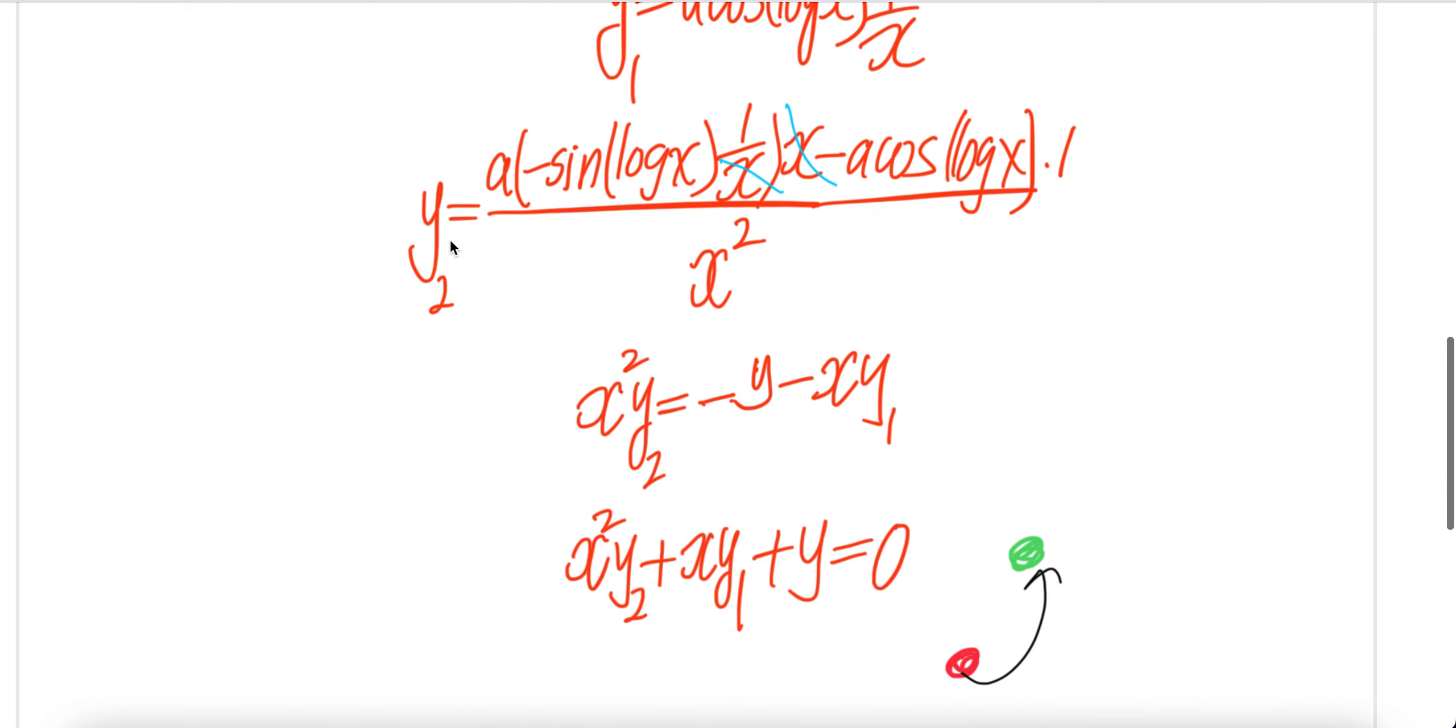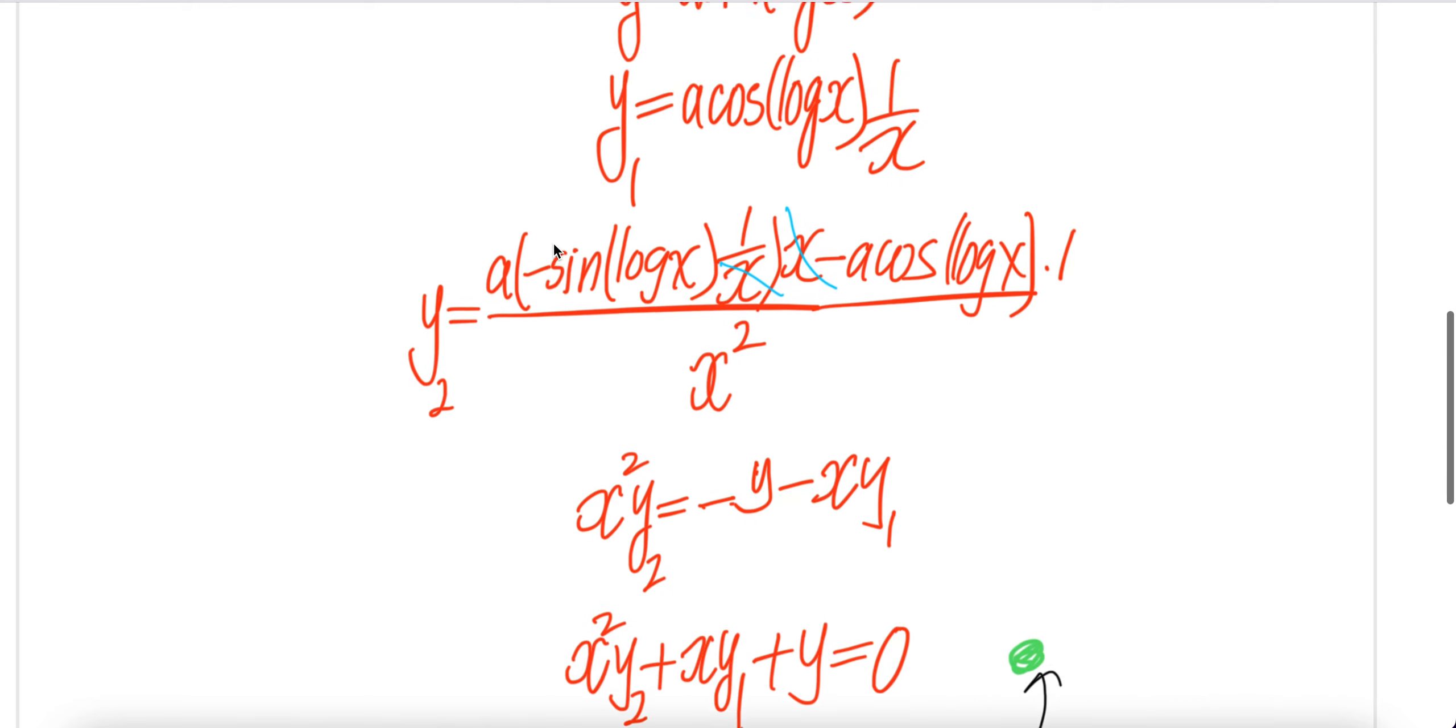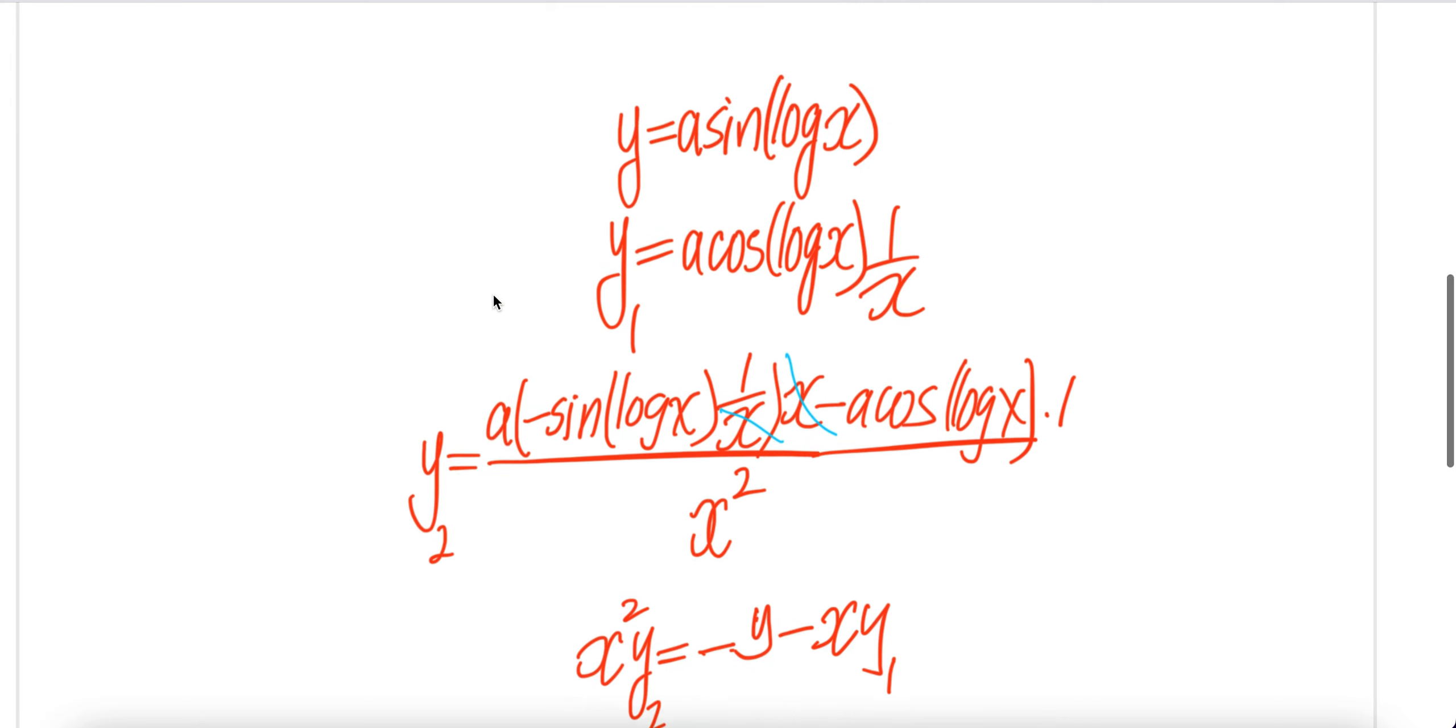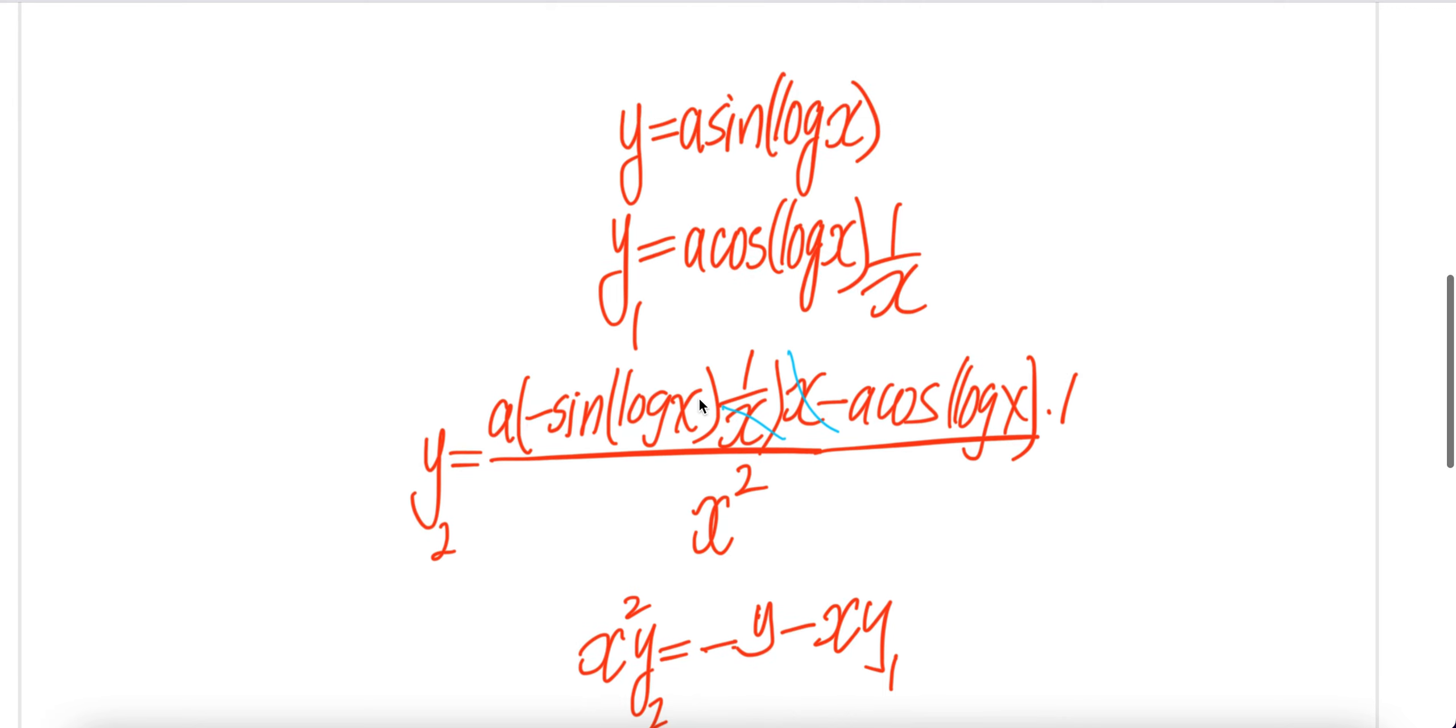Now x and x cancel. Multiply both sides by x², you get x²y₂. And then here you get negative a sin(log x), which is y, so negative y.